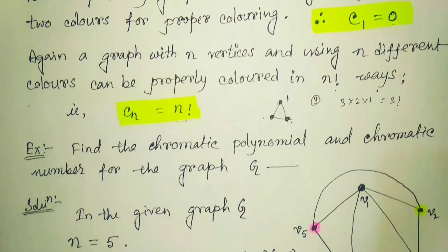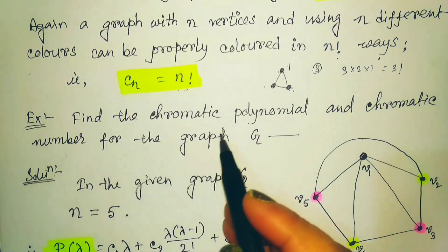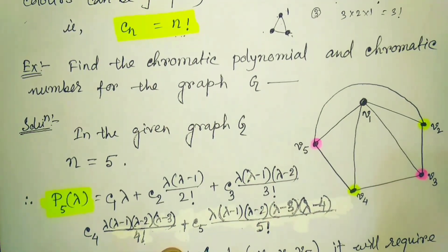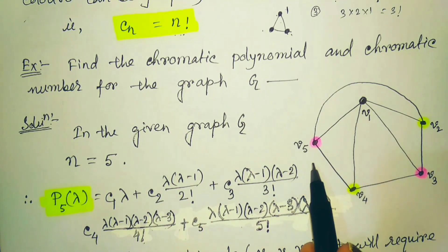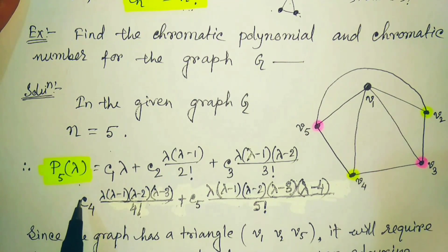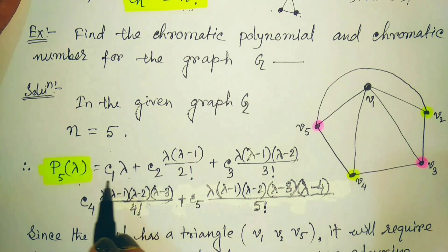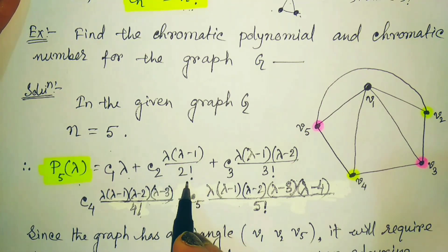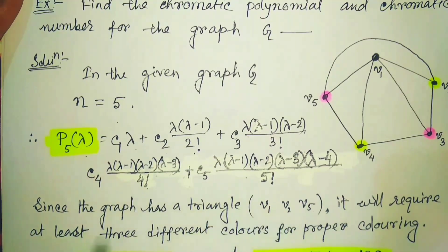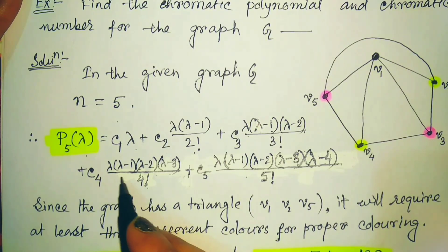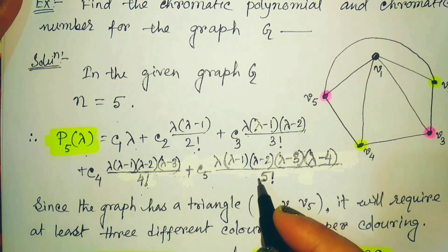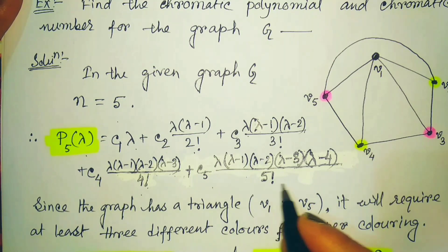Now, how to find the chromatic polynomial — we will explain with an example. Find the chromatic polynomial and the chromatic number for the given graph G. In this graph, there are 5 vertices, so n = 5. We need to find P(5, λ). The expansion is: P(5,λ) = C1·λ + C2·λ(λ−1)/2! + C3·λ(λ−1)(λ−2)/3! + C4·λ(λ−1)(λ−2)(λ−3)/4! + C5·λ(λ−1)(λ−2)(λ−3)(λ−4)/5!.